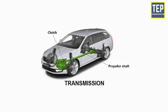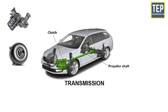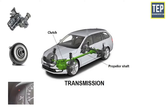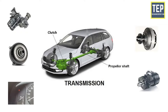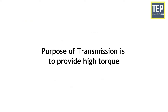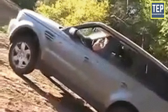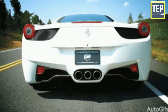The transmission is a device located between the clutch and the propeller shaft. It may be a gearbox, a torque converter, overdrive, fluid drive, or hydraulic drive. The purpose of the transmission is to provide high torque at the time of starting, hill climbing, accelerating, and pulling a load.